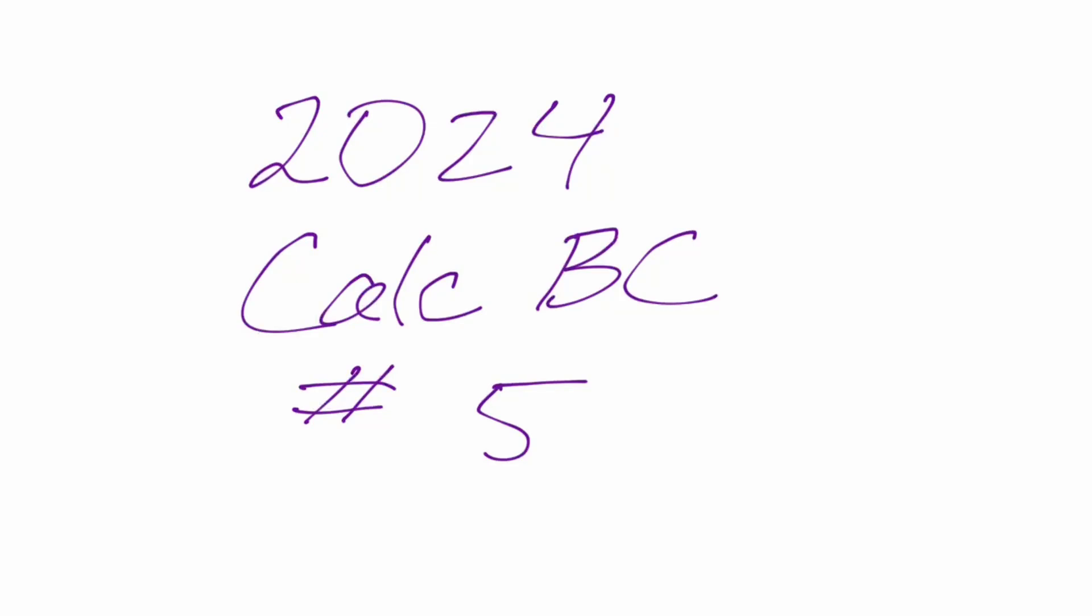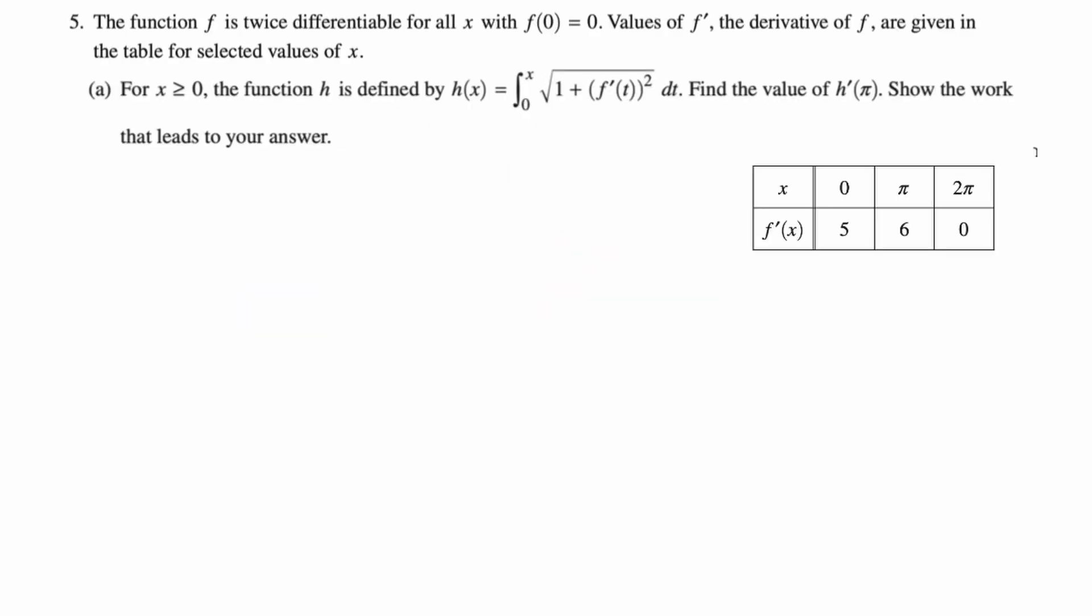In this video we're doing number five from the 2024 Calc BC exam. It's a mixture of stuff. The function f is twice differentiable for all x with f(0) = 0. Values of f prime, the derivative, are given in the table for selected values.